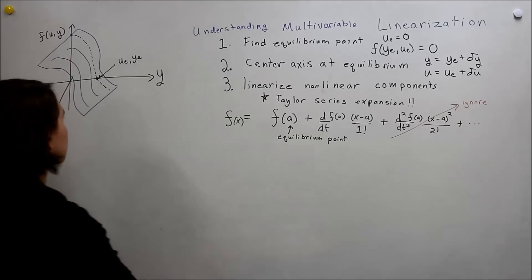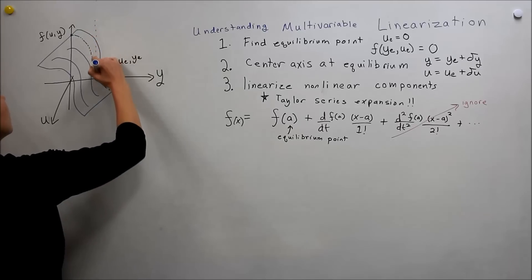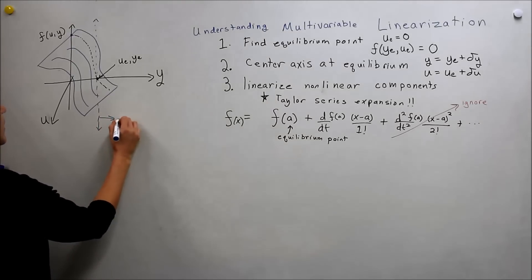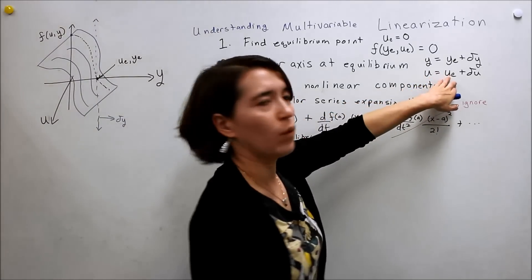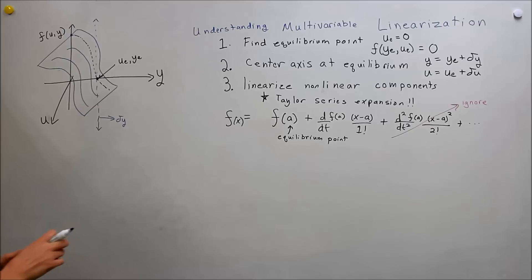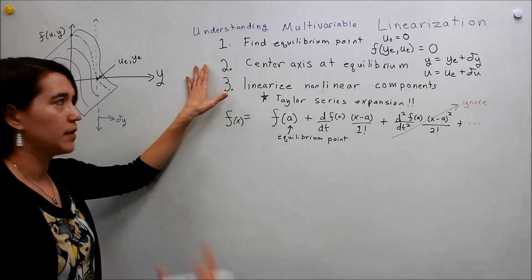And so essentially we're changing our axes to be right on that. So this would be our new delta y. And then this way would also be delta u. But since we choose y_e to be zero, they're essentially the same. Okay? So now we've established our new coordinates.